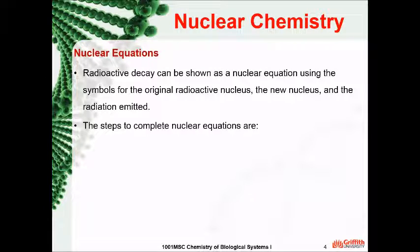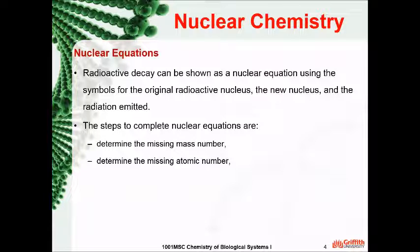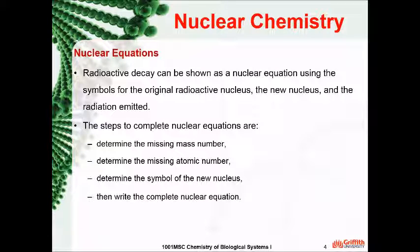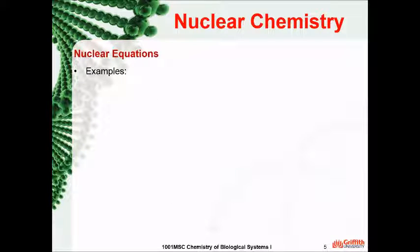The steps to complete nuclear equations are: determine the missing mass number, determine the missing atomic number, determine the symbol of the new nucleus, then write the complete nuclear equation. Let's practice some examples.